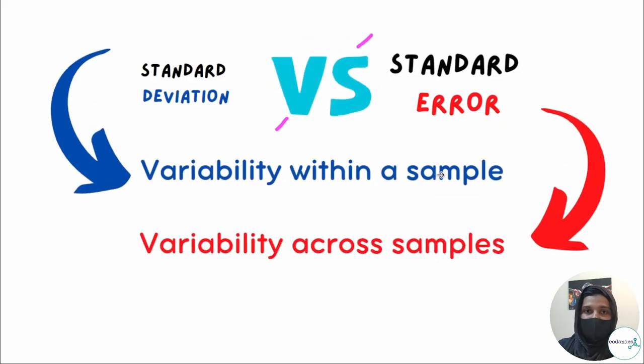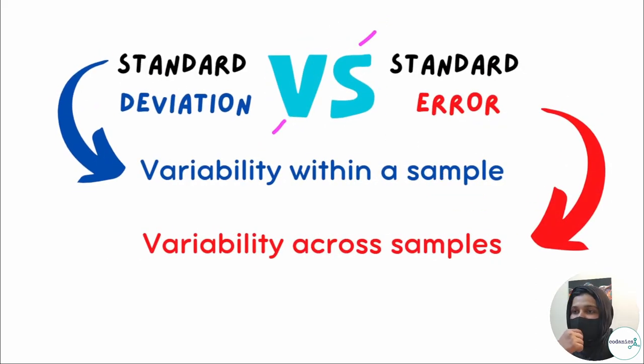If I generalize this, standard deviation measures variability within a sample. Standard error measures variability across samples. Within one group, like variation in heights within a single group, we use standard deviation. But if we have averages from multiple groups like from breakout rooms, the variation between those averages is standard error.